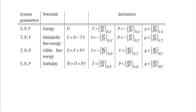Let us summarize. In the table, the left column shows the system parameters — those that can be controlled in an experiment. The second column gives the name of the corresponding thermodynamic potential: for an isolated system controlled by S and V, it is the energy U; the Helmholtz free energy F for a T,V system; the Gibbs free energy G for a T,P system; and the enthalpy H for an S,P system. The right-hand side shows how to find all other parameters as partial derivatives of the thermodynamic potentials with respect to each control parameter.